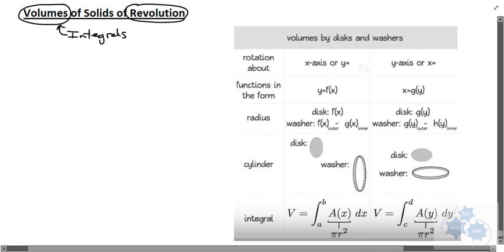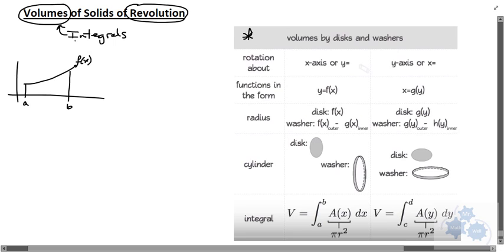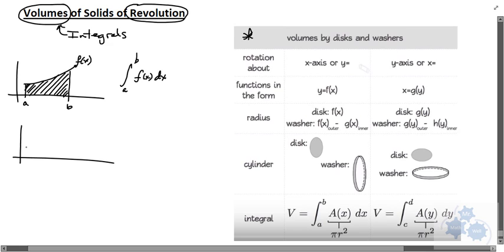Let me just set this up. If you think about what we know already about integrals — let's say we have a function f of x, with lower bound A and upper bound B. Then if we take the integral from A to B of f(x) dx, we're essentially finding the area underneath the curve. That we know.